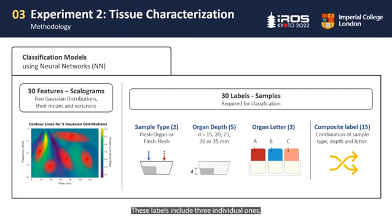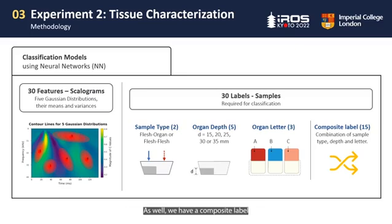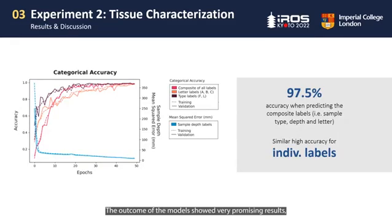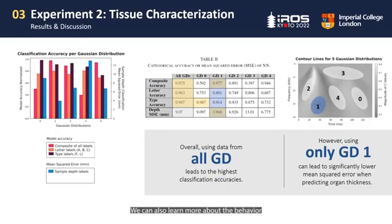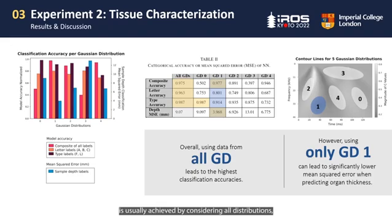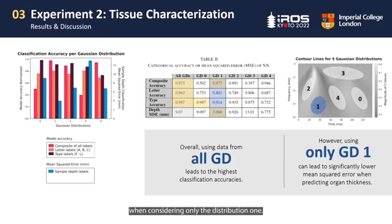These labels include three individual ones: sample type, which tells you about what area was percussed; the thickness of the organ layer; and the silicon mixture used for the organ layer. We also have a composite label, which combines the information from all three labels. The outcome of the model shows very promising results, with an accuracy of 97.5% when predicting the composite labels from data from all five Gaussian distributions. We can also learn more about tissue behavior by looking at the accuracy of individual distributions. For example, the depth label has a mean square error that is significantly lower when considering only distribution one, implying that lower frequencies close in time to the percussion event may contain vital data to predict organ size.